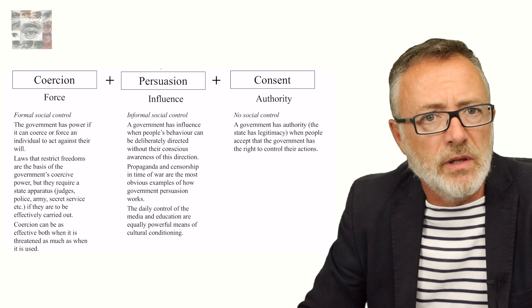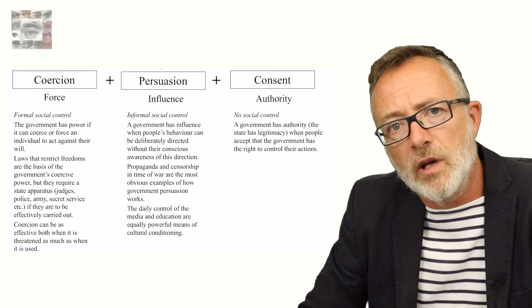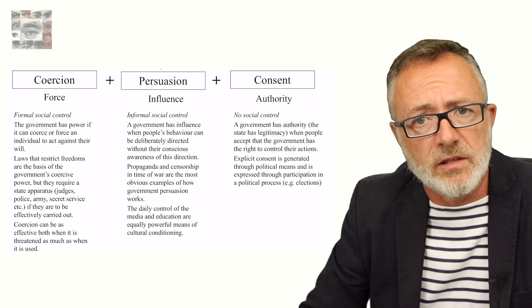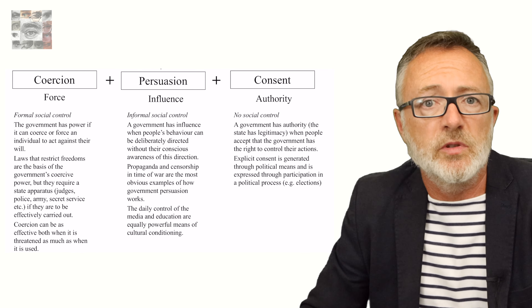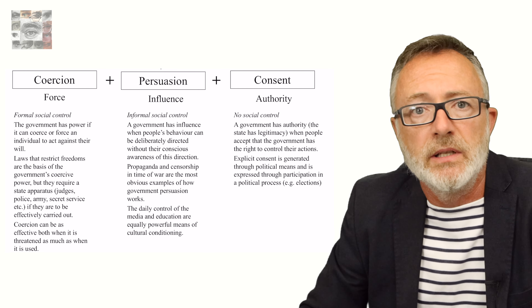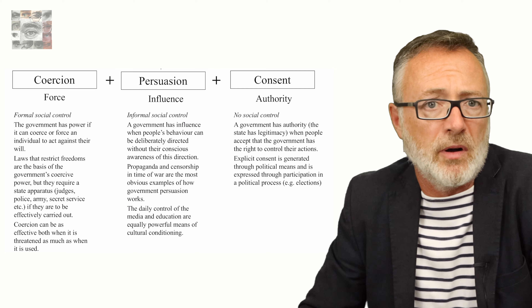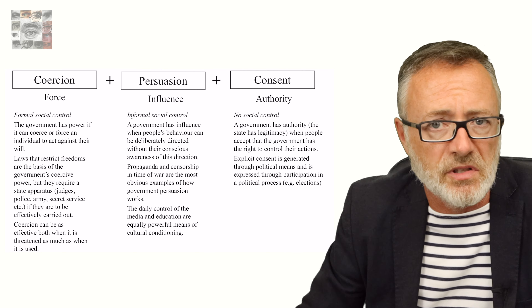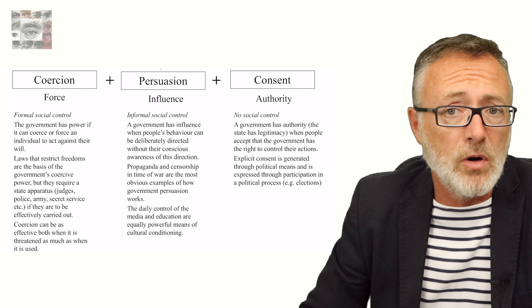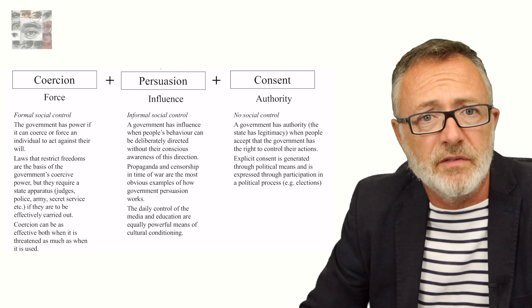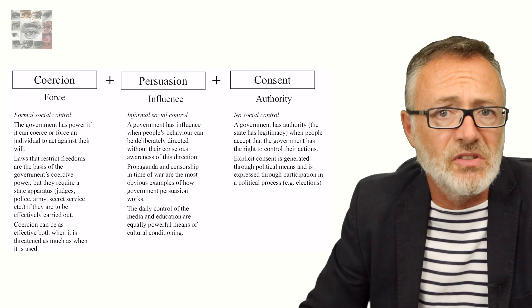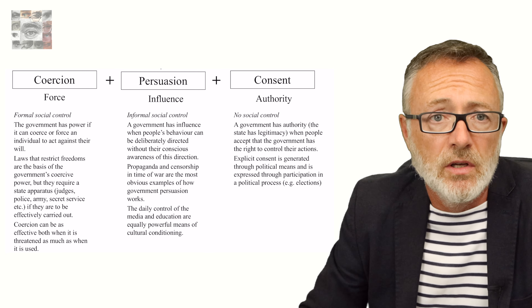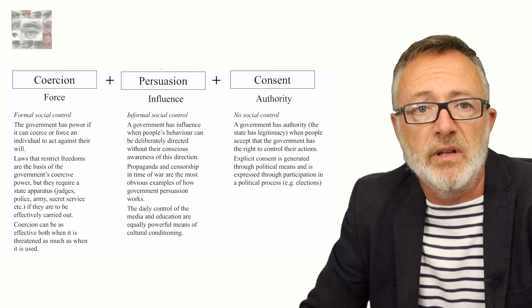There are two types of consent to consider, because this is not simply a story about democratic government. Firstly, explicit consent is generated through political means, most obviously through democratic elections in which people choose their representatives in an open and fair process. But this is not the only way — it's not only through multi-party elections that explicit consent is generated. Being engaged in an ongoing decision-making process in a village community or in a place of work, where decisions can make genuine differences to people's lives, can generate as much consent among the governed as any multi-party elections that take place every five years and never result in any apparent change.